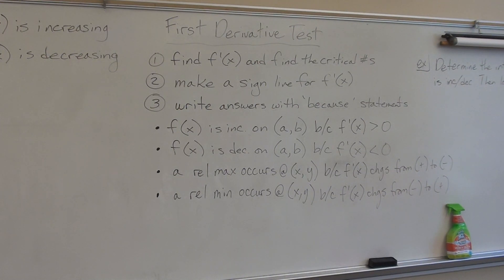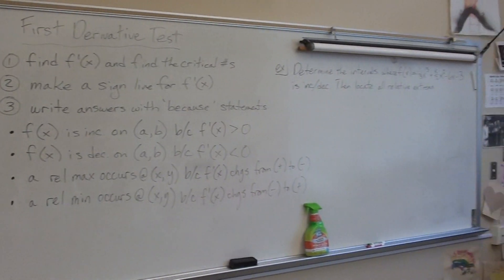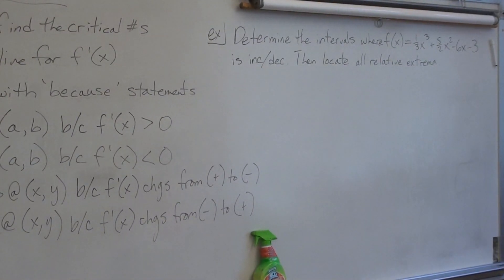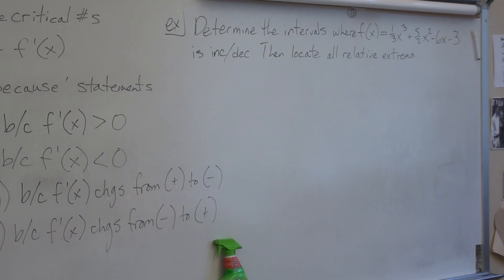You get all this information from a sign line, which is why they used to accept sign lines as justification. But the problem was students were making the sign lines without interpreting them properly. So these because statements are there to show that you know how to interpret the sign line correctly.